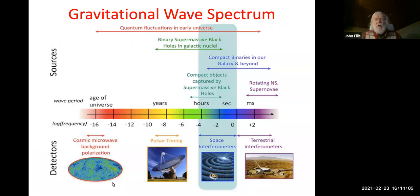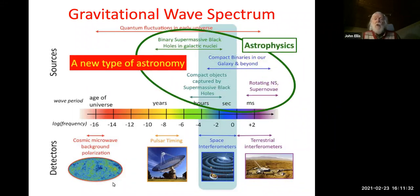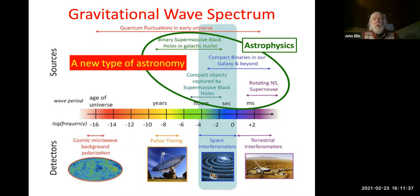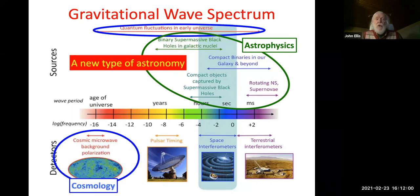Here I have a panorama of the frequency and the typical periodicity of gravitational waves, ranging from the age of the universe down to milliseconds. You see a number of possible sources: astrophysical sources including black holes — in particular massive black holes — compact objects being captured by supermassive black holes, rotating neutron stars, and possibly supernova explosions if they're sufficiently asymmetric. Then of course we have cosmological sources like quantum fluctuations in the early universe, observable as polarization effects in the cosmic microwave background radiation.